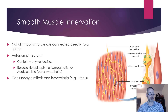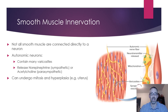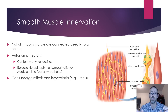Smooth muscle responds to a whole host of different mediators, making it far more dynamic than skeletal muscle or cardiac muscle. In skeletal muscle, a somatic motor neuron made a direct connection to a skeletal muscle cell — the neuromuscular junction. However, in smooth muscle there is no direct connection with a neuron.